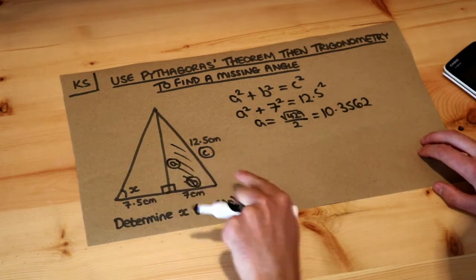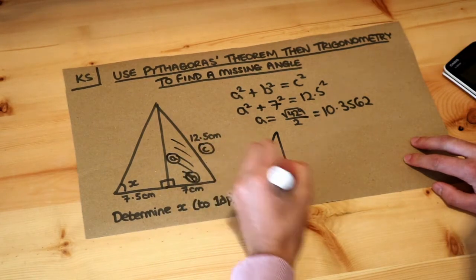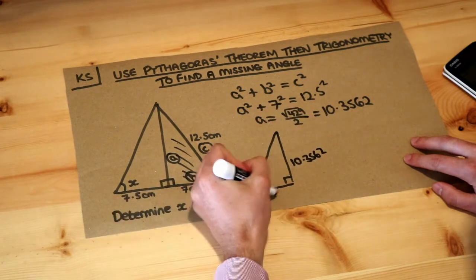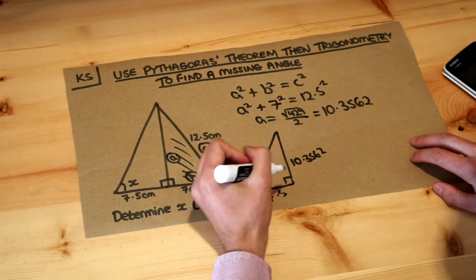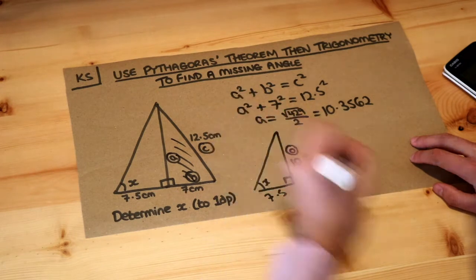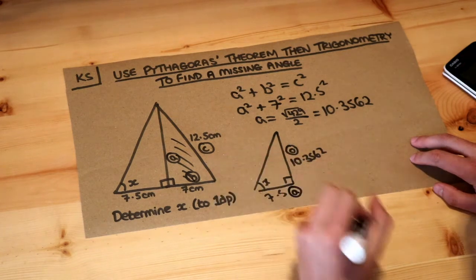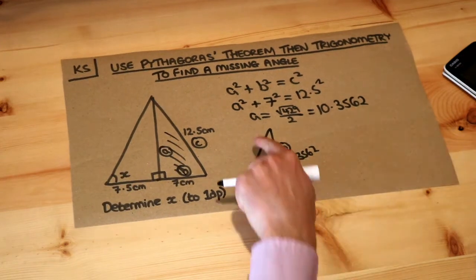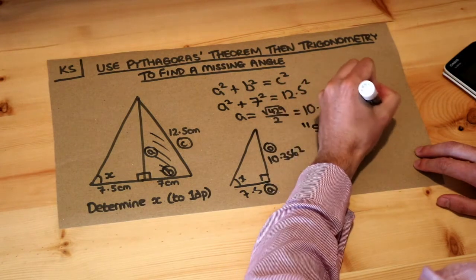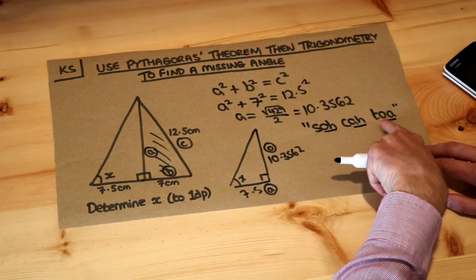Now let's draw the left triangle out separately to help visualize it. We have angle x, a right angle, the height is now 10.3562, and the bottom length is 7.5. Using SOH-CAH-TOA, the side opposite the angle is labeled O, and the side adjacent to the angle is labeled A. We're not using the hypotenuse. Since we're using O and A, we'll use tan.